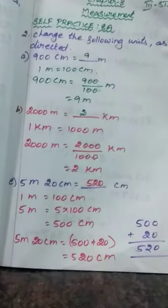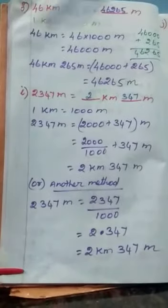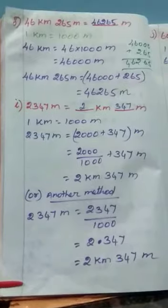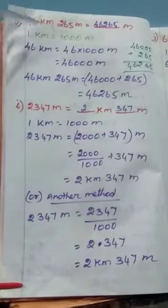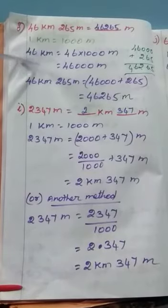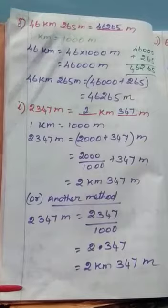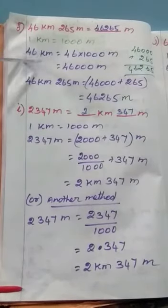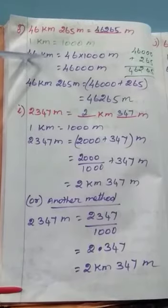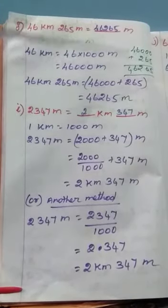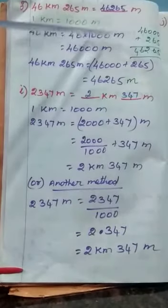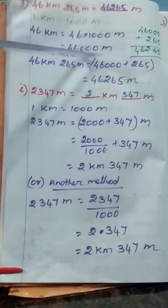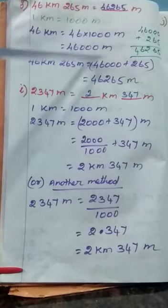Next one: 46 kilometer and 265 meter equals dash meter. You have to convert the biggest unit to the smallest unit — biggest to smallest means you have to multiply. First convert 46 kilometer into meter. Formula: 1 kilometer equals 1000 meter. So 46 kilometer equals 46 into 1000. 1 into 46 is 46, and there are 3 zeros, so write 3 zeros in the answer: 46,000 meter.